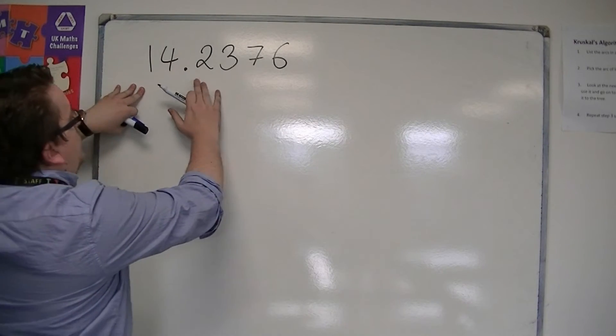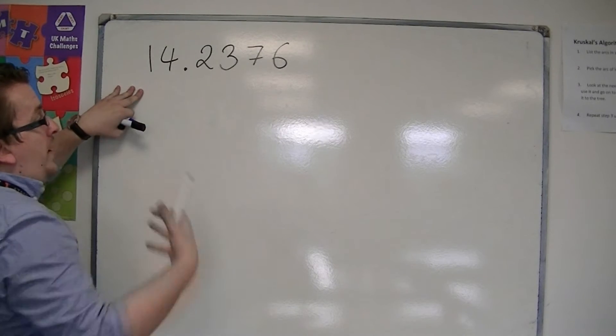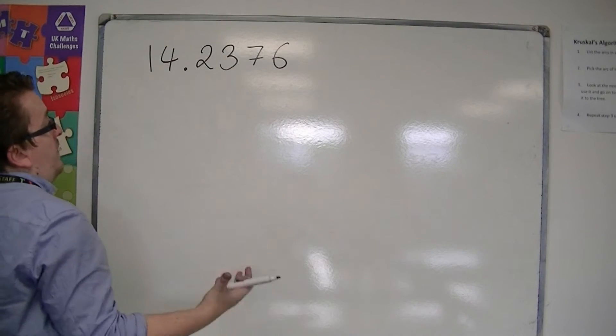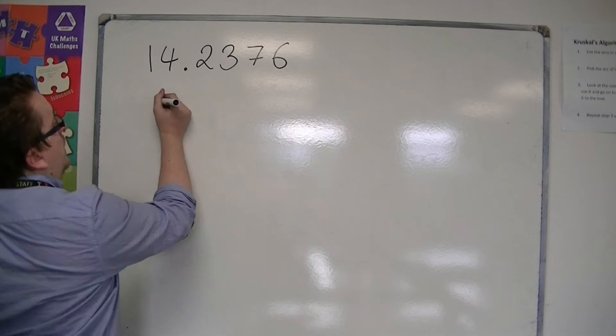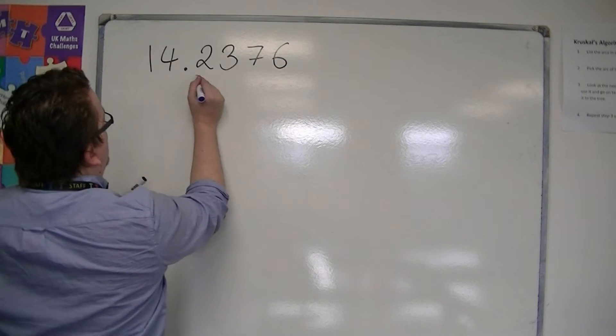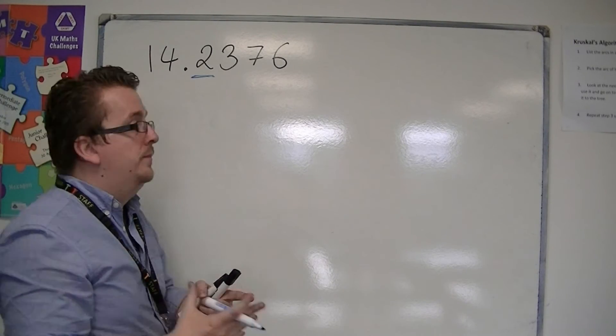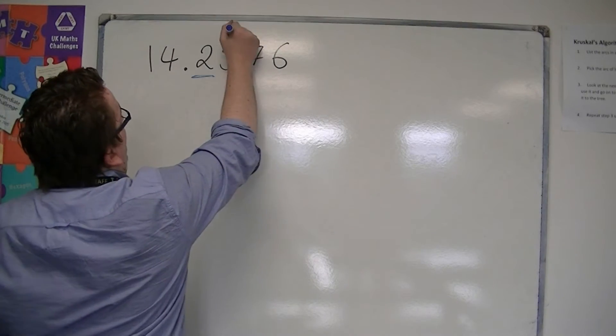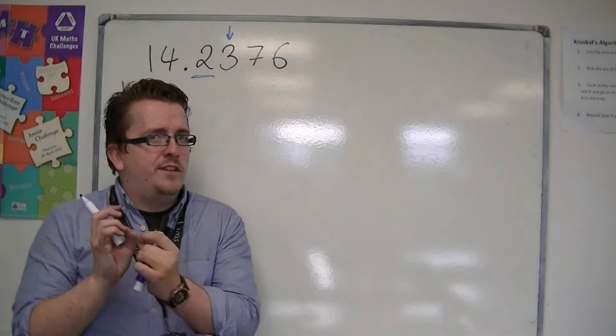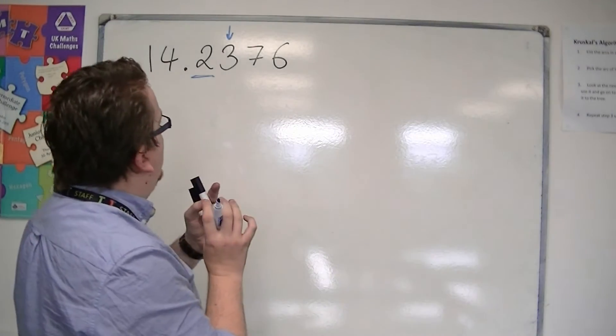So, 14.2376 centimeters. And we want to round it to the nearest one decimal place. We're looking at the first decimal place, and we look one to the right, as we have always done. So it's all a case of identifying which number we need to look at.